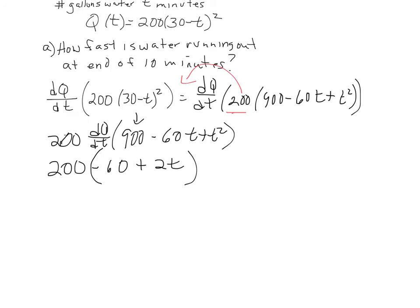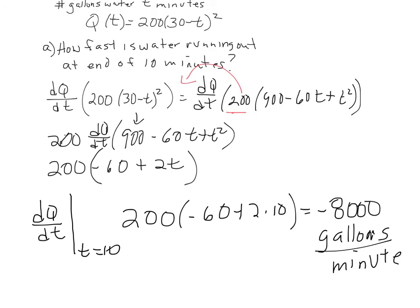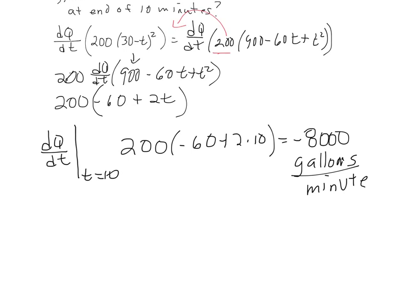To evaluate how fast the water runs out at 10 minutes, plug t = 10 into the derivative: 200 times (−60 + 2(10)) gives −8,000 gallons per minute. Why is it negative? It makes sense because the tank is draining — if you ended up with a positive value, your tank would be filling up. Use common sense to check if a negative value should be expected.